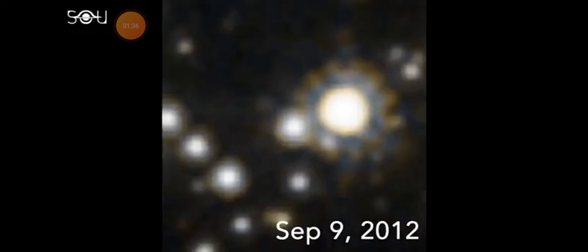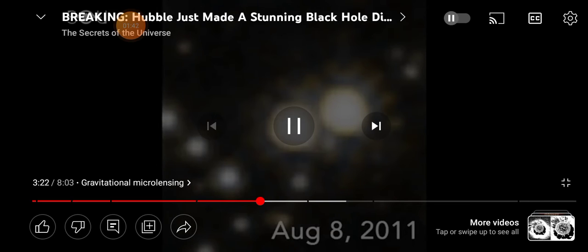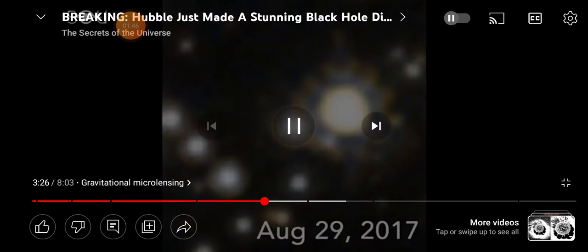Astronomers first noticed this microlensing event way back in August 2011. The star brightened and then faded back to its normal brightness as the black hole passed by.